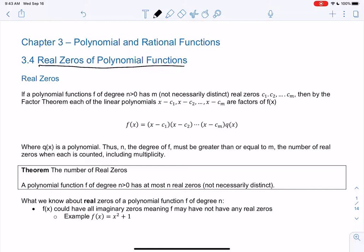So if a polynomial for degree n greater than 0, so the power is greater than 0, it has m not necessarily distinct, not necessarily distinct just means you can have repeats, right? Those are the zeros with multiplicity. So it has m real zeros, which is not the same as the power, notice that, c1 through cm.